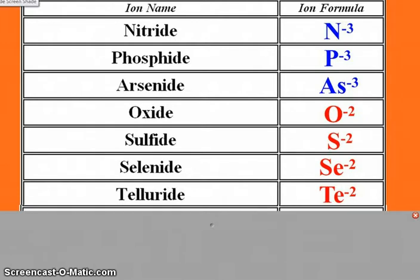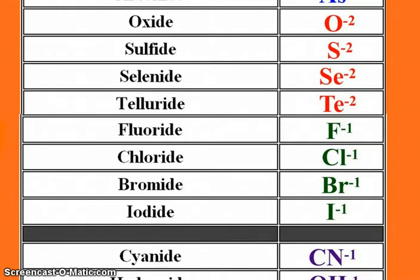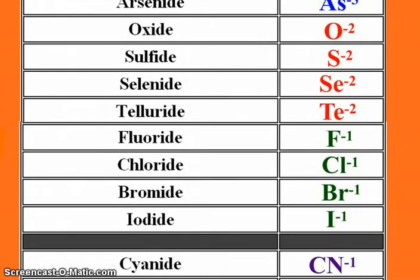The halogens, fluorine, chlorine, bromine, and iodine, they form negative one ions, fluoride, chloride, bromide, and iodide.